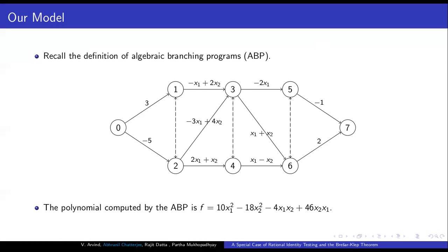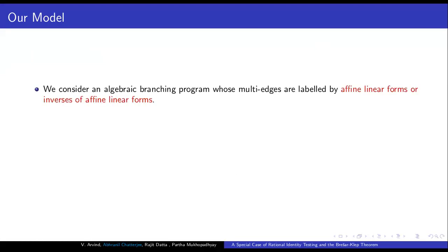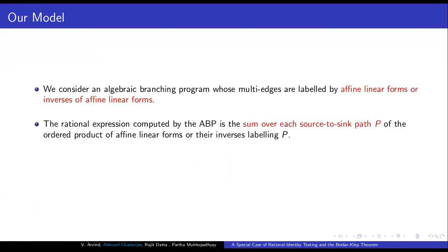What we do in this work is generalize the definition of ABP. Instead of labeling each edge by a linear form, we label each edge by a sum of linear forms and inverses of linear forms — equivalently, we allow multi-edges between nodes labeled by linear forms and their inverses. The rational expression computed by this model is the sum over each source-to-sink path P of the ordered product of linear forms and inverses of linear forms. This model computes a rational expression of inversion height 1, and the size is the total number of multi-edges.